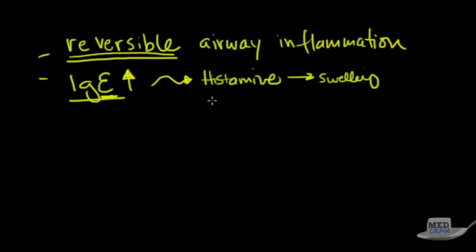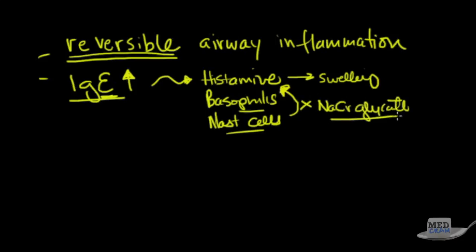IgE uses the basophils and mast cells. These release histamine. There are ways of preventing these cells from releasing histamine and that is sodium chromoglycate. You'll see medications like chromoglycate. Sodium chromoglycate is used to stabilize these mast cells and basophils and prevent histamine. So sometimes we actually use that in the treatment of asthma.